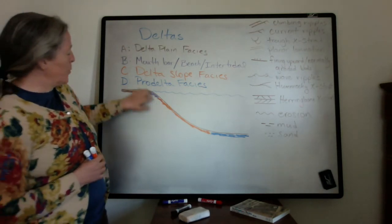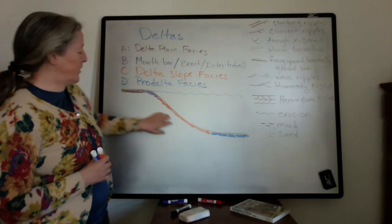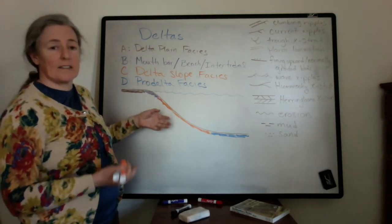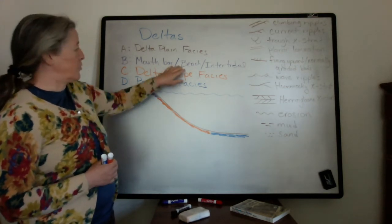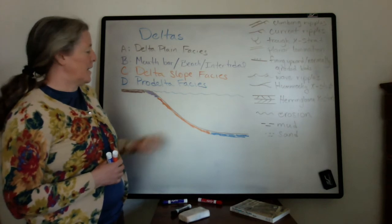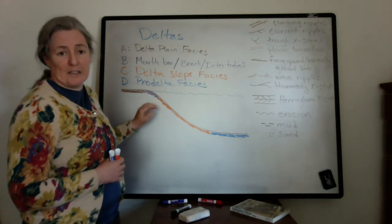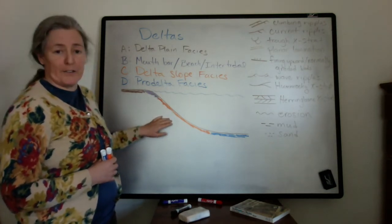Further down into deeper water, there's the delta slope facies, which would contain things like turbidites, storm deposits, and occasionally some tidal flows can bring sediment out there as well.